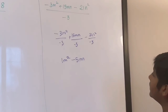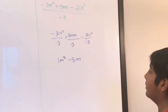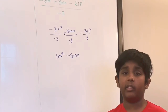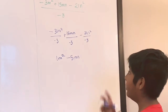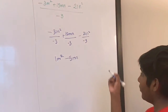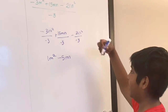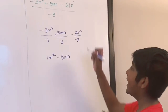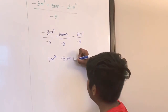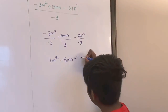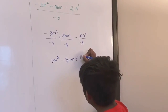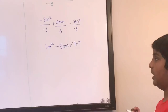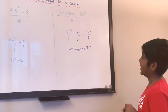Negative 21n squared divided by negative 3: we're dividing a negative by a negative, so our answer is positive. 21 divided by 3 is 7, so that's positive 7n squared. So our final answer is 1m squared minus 5mn plus 7n squared.